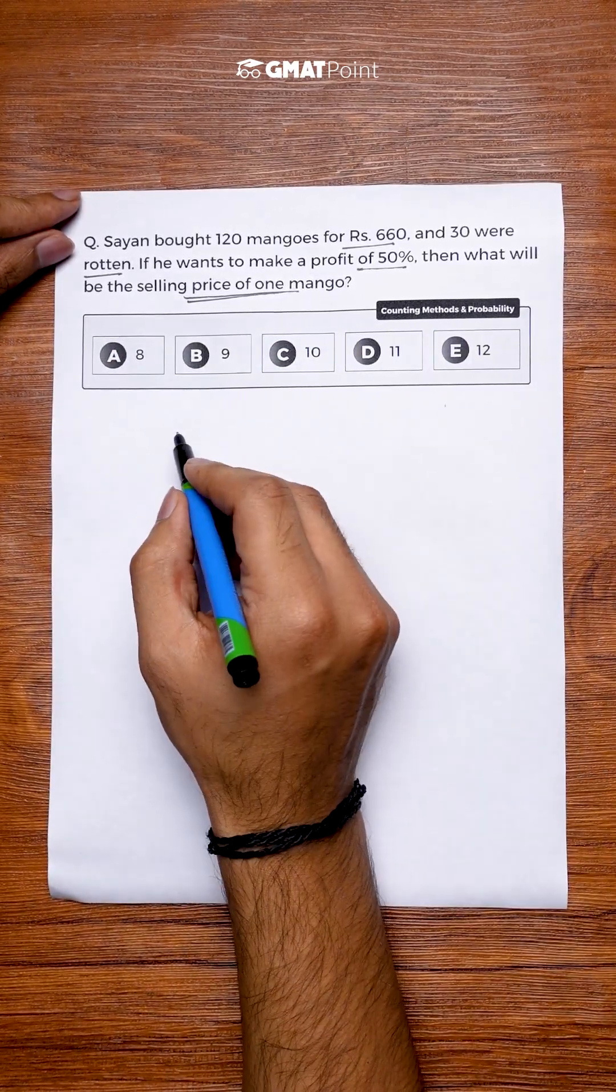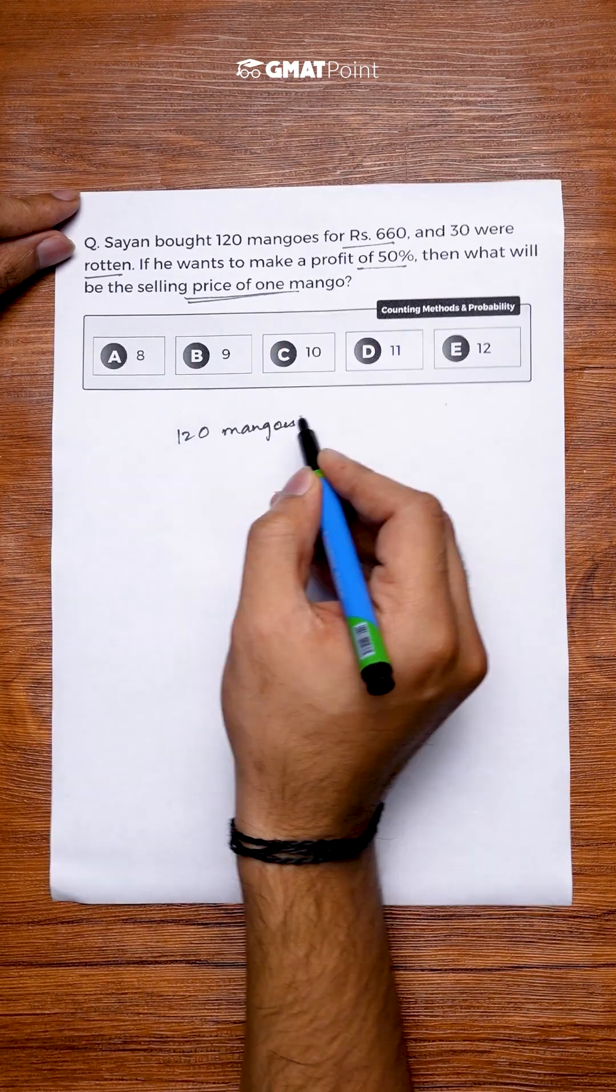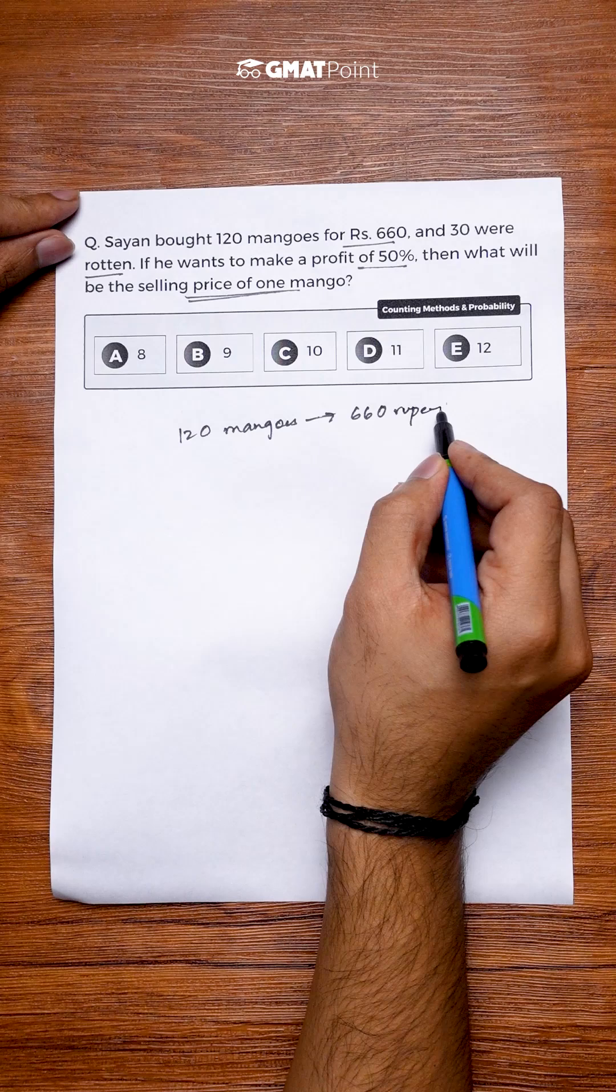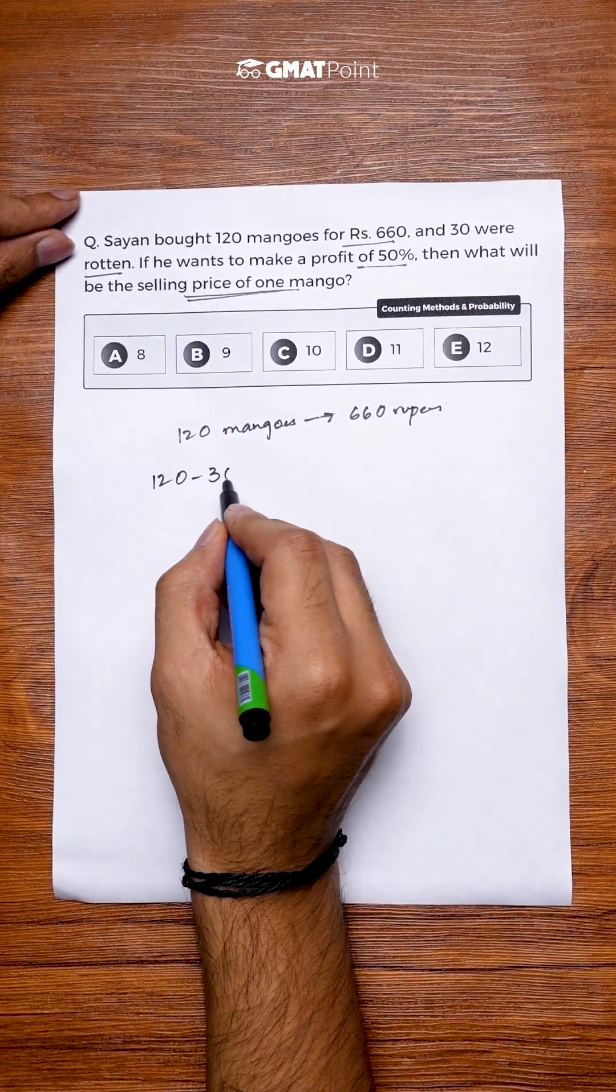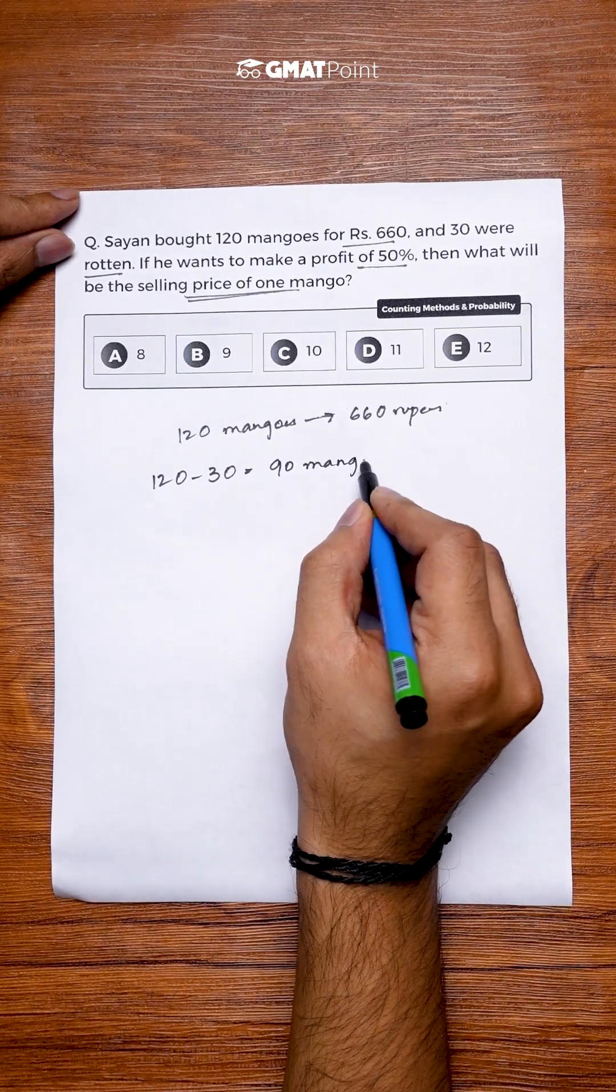So basically we are given that Sayan bought 120 mangoes for 660 rupees. And we are told that 30 of them were rotten. So the number of mangoes that he can sell is 120 minus 30 which is equal to 90 mangoes.